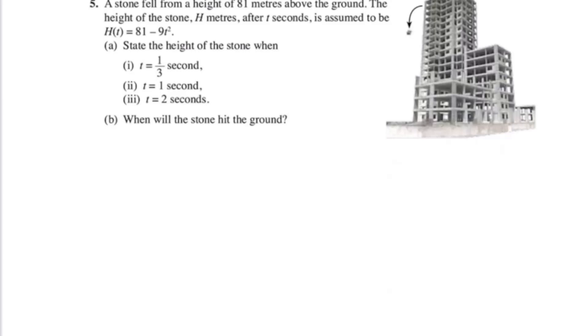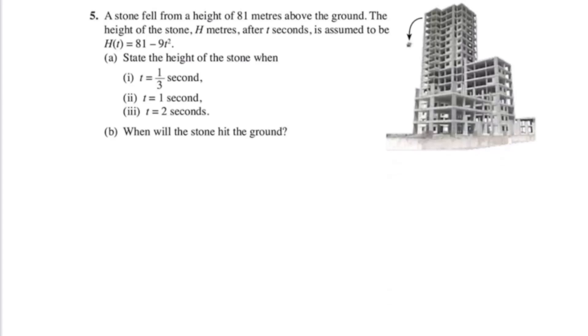Next one, number 5. A stone fell from a height of 81 meters above the ground. The height of the stone is assumed to be h(t) = 81 - 9t². So state the height of the stone when t is 1/3. You want to put 1/3 inside. For the first one, when t = 1/3, this will be 81 - 9(1/3)². So 1/3 squared is 1/9. 9 times 1/9 is 1. 81 - 1, answer is 80 meters.